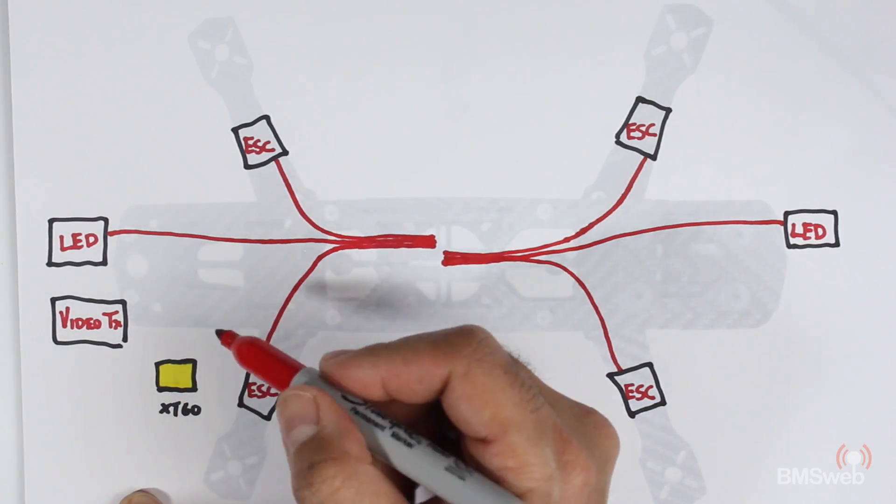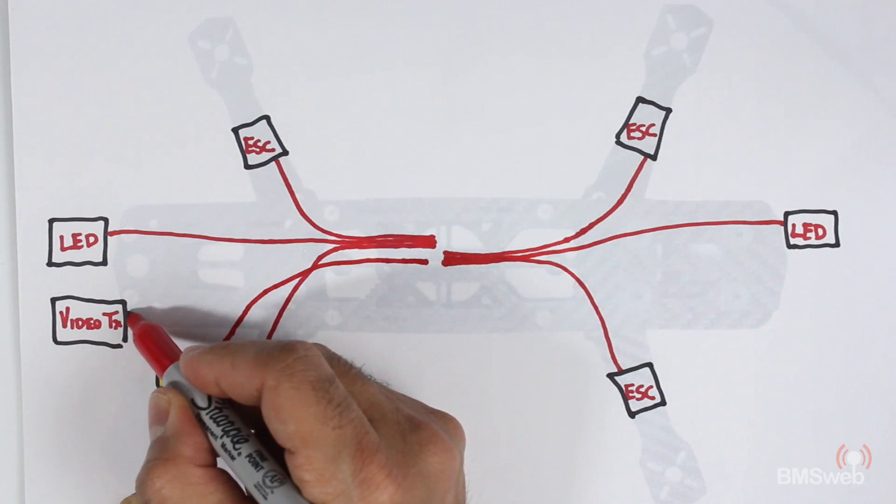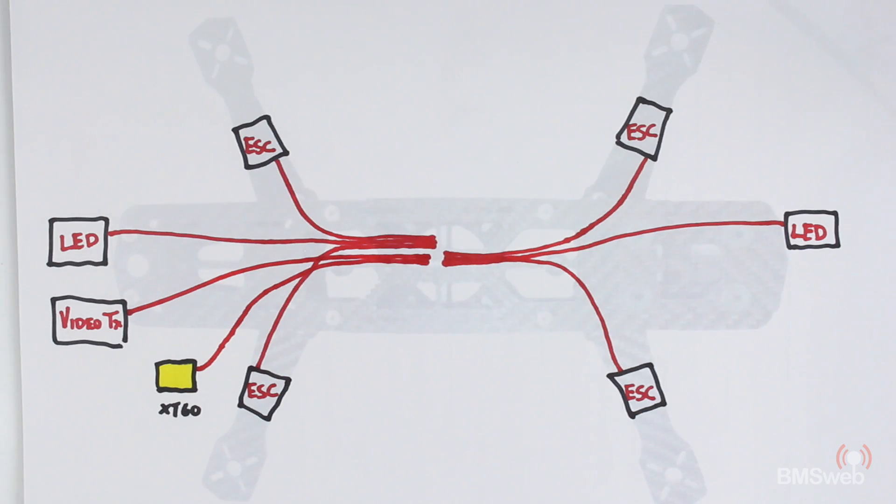That's the same with the rear end. Now we'll do the XT60 connector and the video transmitter. Now we'll do all of our negatives.